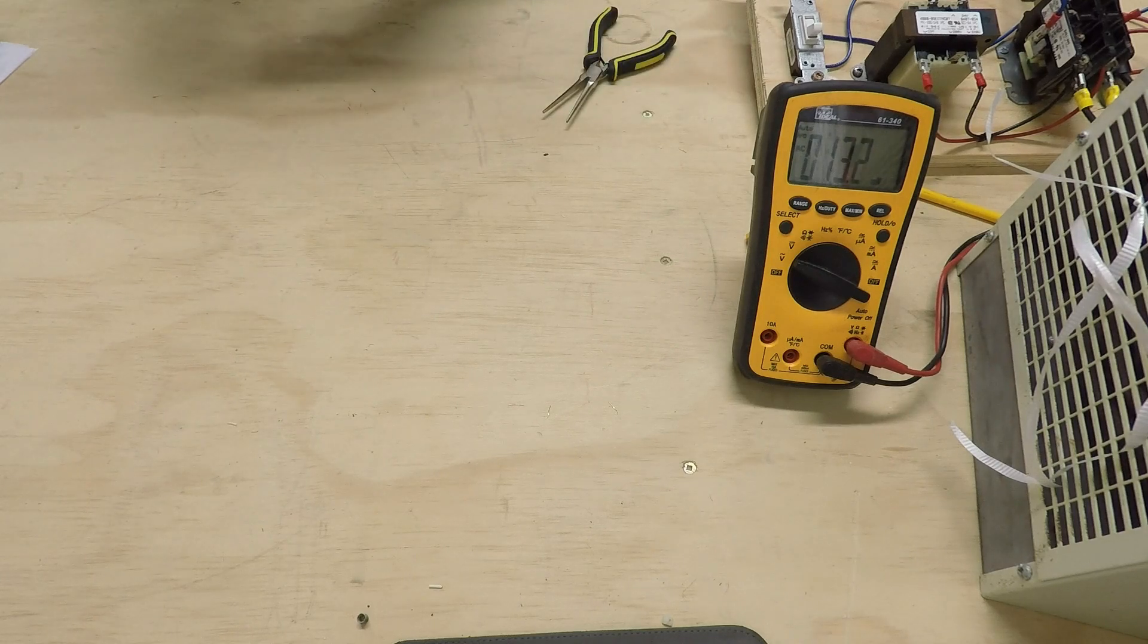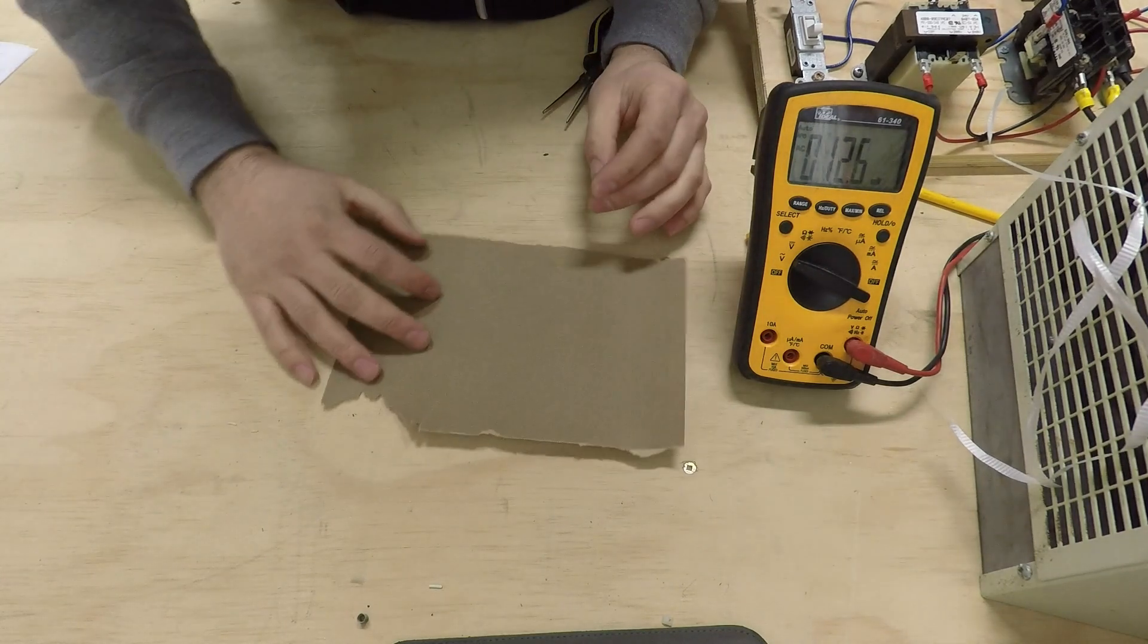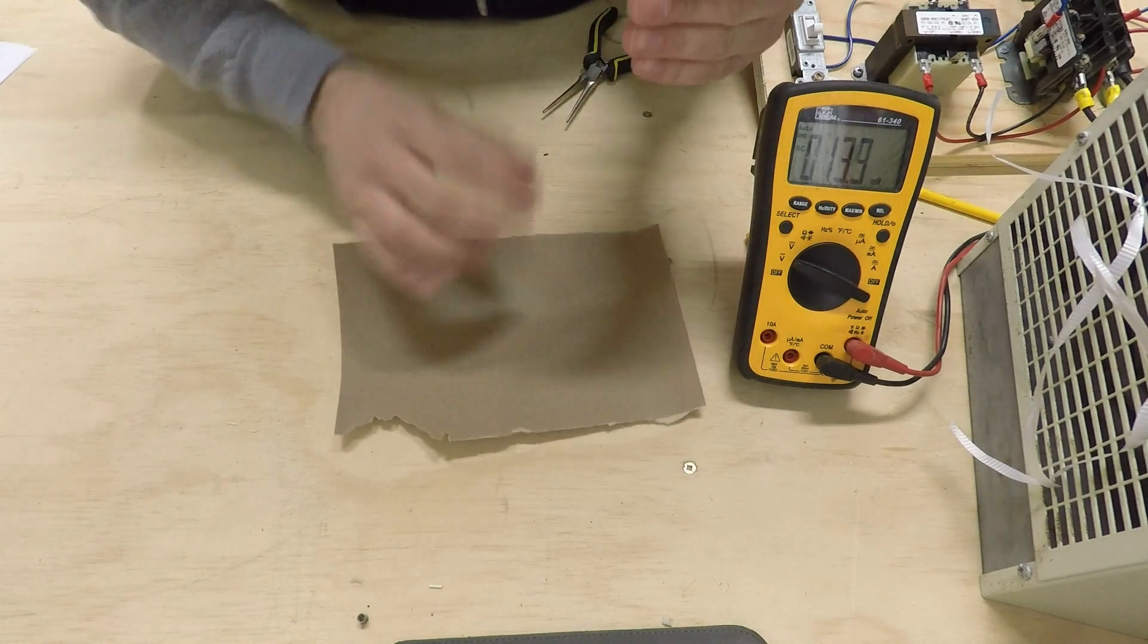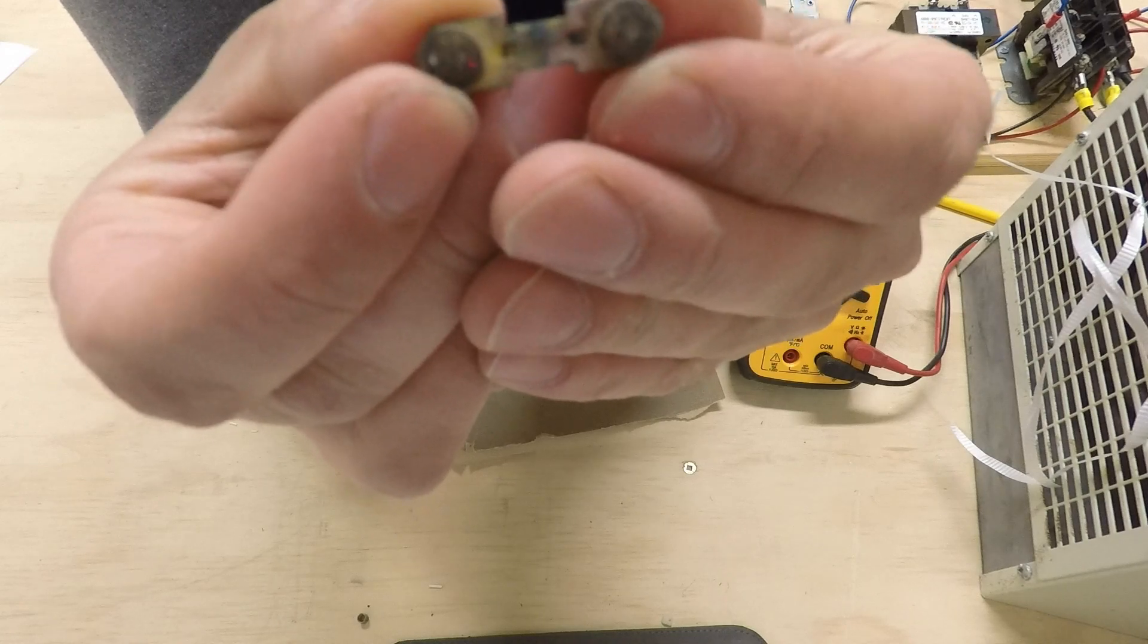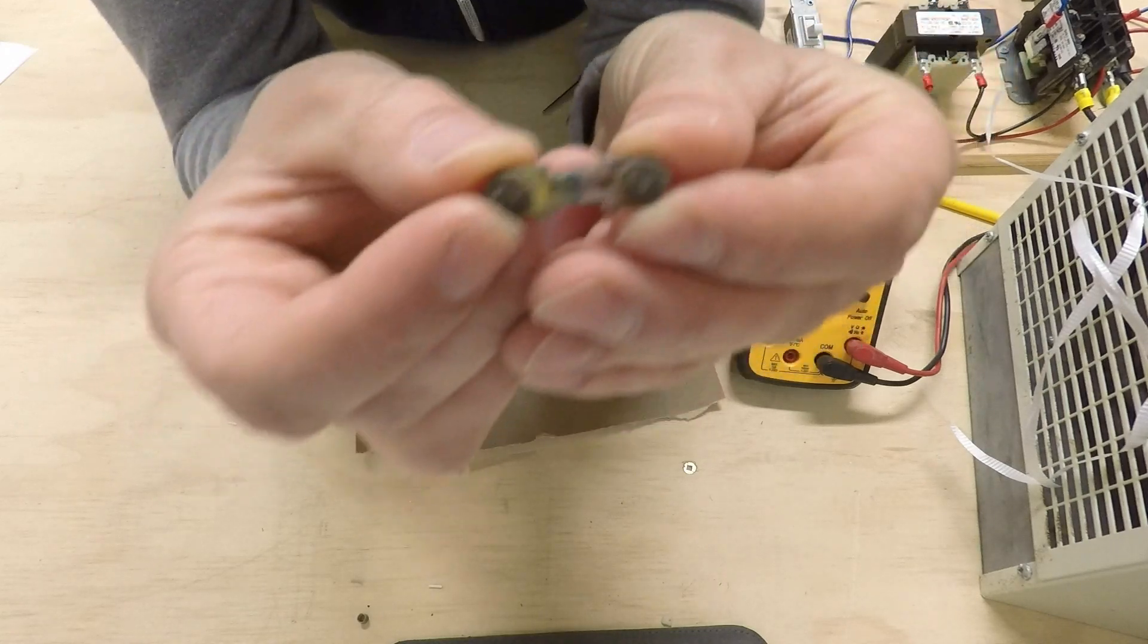And what you can do now is you take some sandpaper, and I'll show you the contact up close. If you look closely at it, hopefully it shows up, you can see it's kind of charred, burnt. It looks like there's probably some pitting on it also.